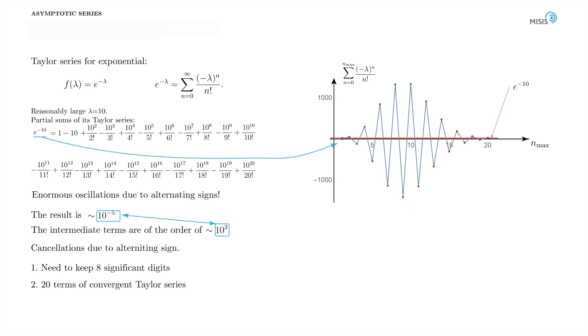So Taylor series, despite being convergent at all, is completely unacceptable as a way of calculation. The fair question is, how do we compute e to minus lambda then? Well, the easiest way is to compute e to lambda instead. Its Taylor series has no sine flips. And the second step is to build the inverse function to obtain e to minus lambda. So this was just the example to show you that convergent series is not necessarily the most convenient one, as it can be practically useless.